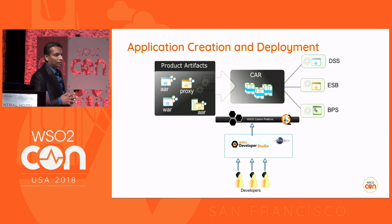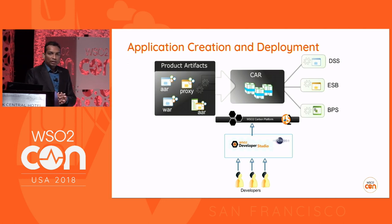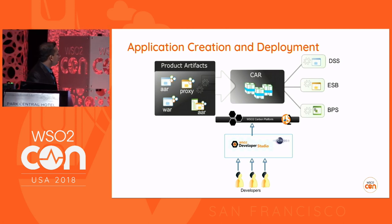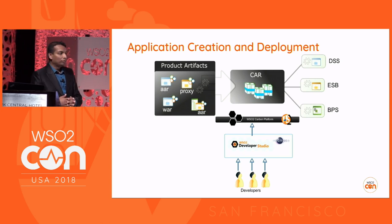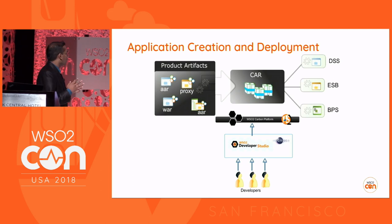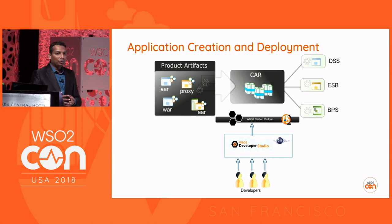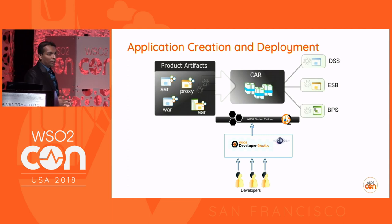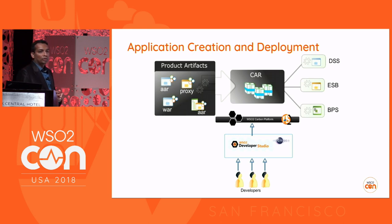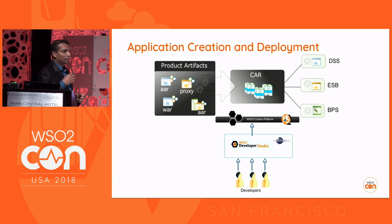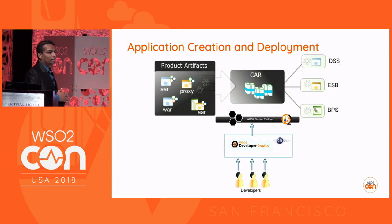To create these artifacts, we have a tool called Developer Studio or Enterprise Integrator Tooling, which is an Eclipse-based development tool. Developers use this Eclipse-based tooling to create different kinds of product artifacts like proxy services and data services. Once artifacts are created, we need to create a deployable archive — a CAR file — to get those artifacts deployed into the actual server runtime.